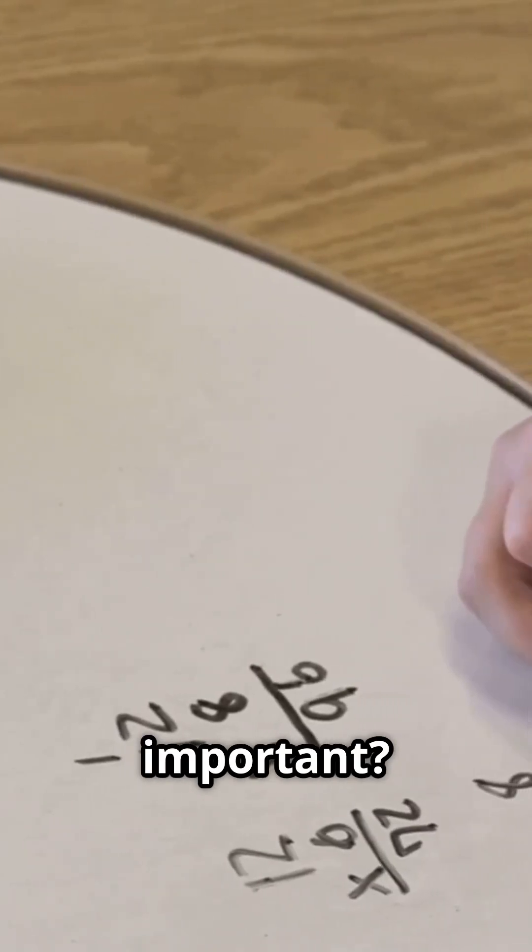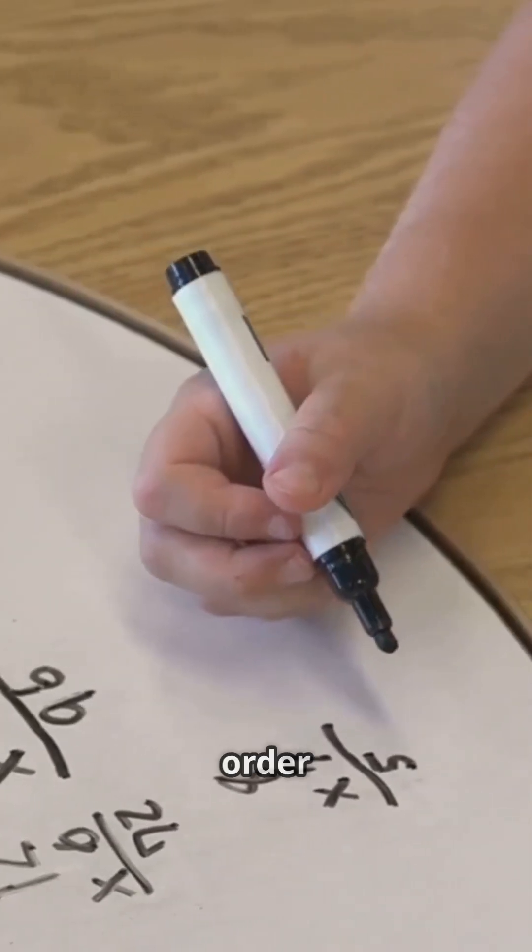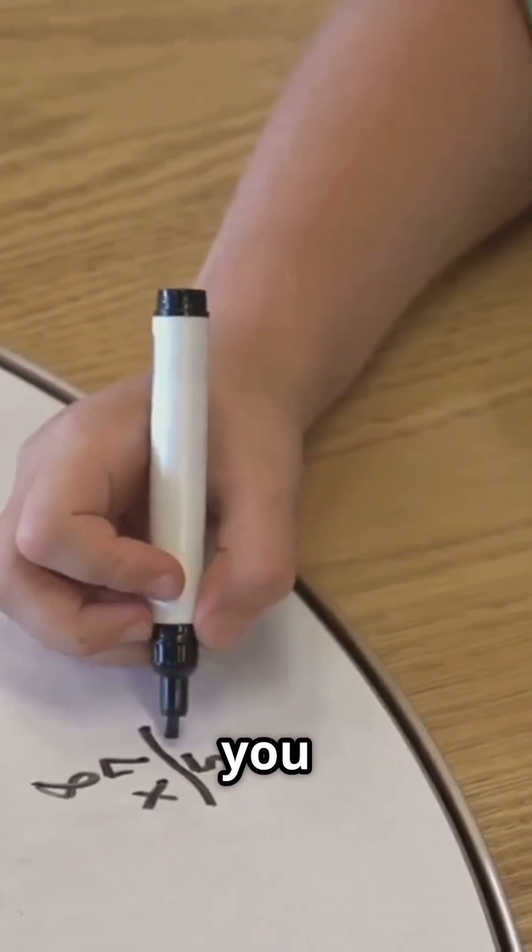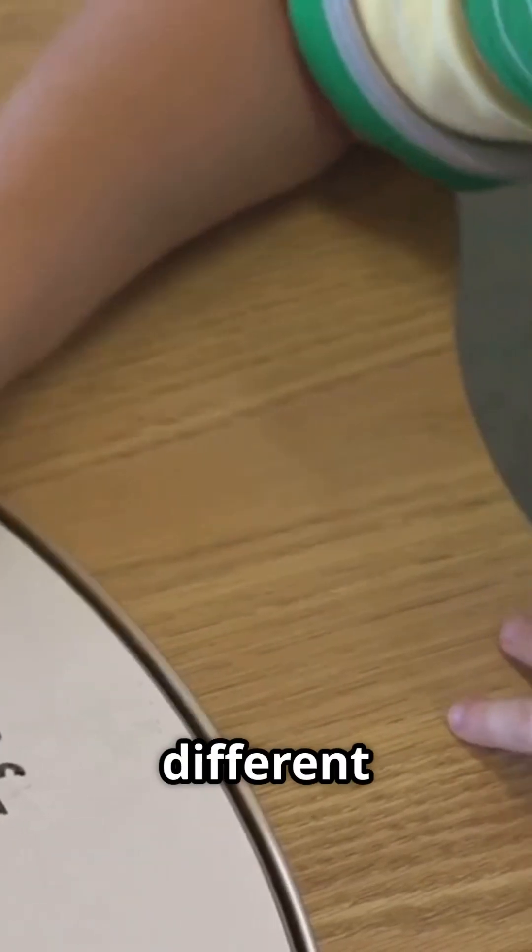Why is this important? Because math isn't just about numbers, it's about the order in which you handle them. If you skip the rules, you might end up with a completely different answer.